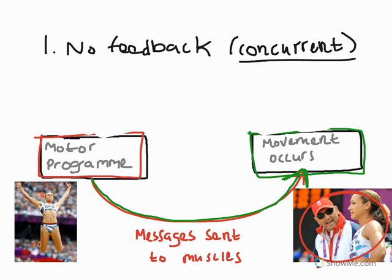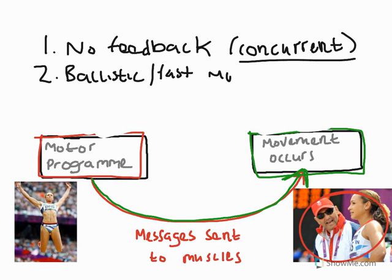This would be very similar to something like a javelin throw as well. So we get a mark for saying no feedback. We get a second mark when we say that this tends to occur with ballistic or fast movements. I've used the example of a long jump, but a very classic example is a golf swing — from the top point to the strike — a ballistic or fast movement such as that.